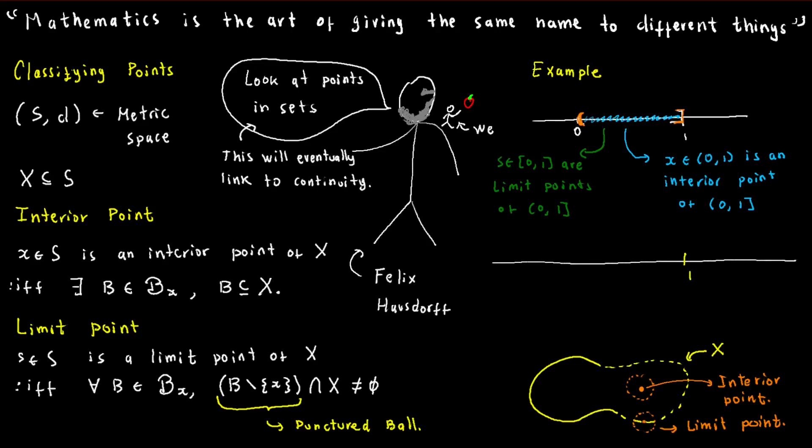Let's look at another example to solidify your understanding. Consider the set of real numbers of the form 1 over n when n is a positive natural number. This set has no interior points because no ball can fit entirely inside it.